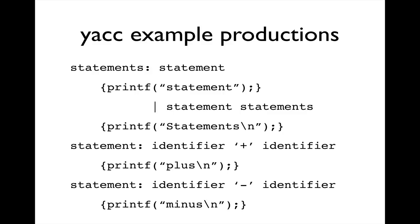Here's a simple example of some productions and associated actions. I have 'statements' as my non-terminal, colon, 'statement' — statement itself is a non-terminal defined further down. The action following that production simply prints out the word 'statement' if I recognize a statement. I have another production: statements also produces, via vertical pipe, 'statement statements' — a recursive reference to the statements non-terminal — and the action prints 'statements'. Then I define 'statement' as identifier plus identifier, printing 'plus', and another production, statement colon identifier minus identifier, printing 'minus'.